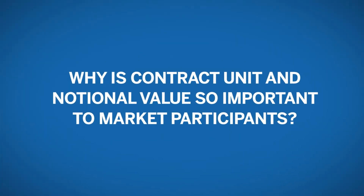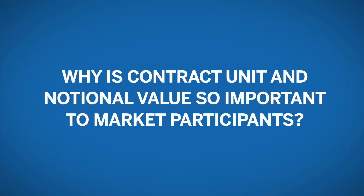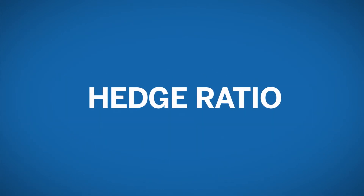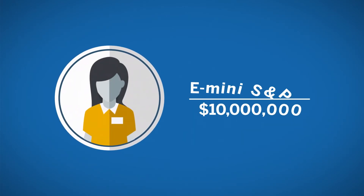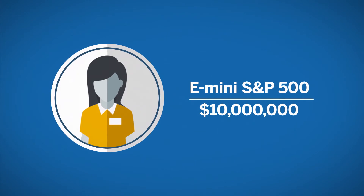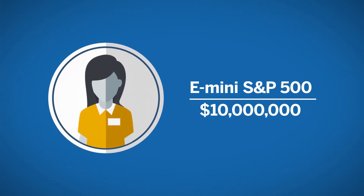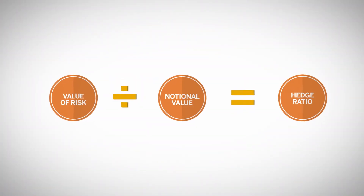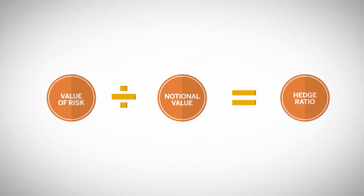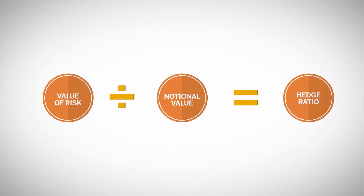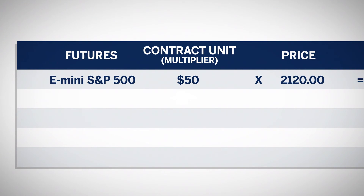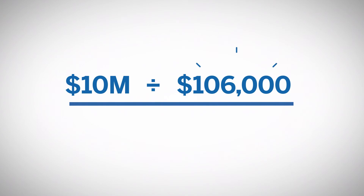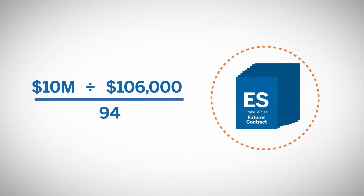Why is contract unit and notional value so important to market participants? Notional values can be used to calculate hedge ratios versus other futures contracts or another risk position in a related underlying market. How might a portfolio manager with a $10,000,000 U.S. equity market exposure use the notional value of the E-mini S&P 500 Futures to determine a hedge ratio? A hedge ratio is determined by taking the value at risk — in this case $10,000,000 — and dividing it by the notional value of the contract. Using our previous example of the E-mini S&P 500 Futures with a value of $106,000, $10,000,000 divided by $106,000, rounded to a whole number, equals 94 futures contracts.